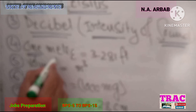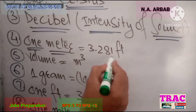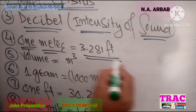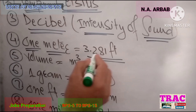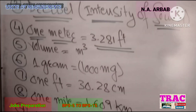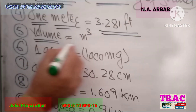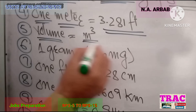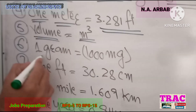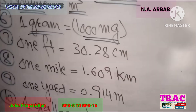Number 4: 1 meter is equivalent to 3.281 feet. Number 5: the unit of volume is meter cube. Number 6: 1 gram is equivalent to 1000 mg.